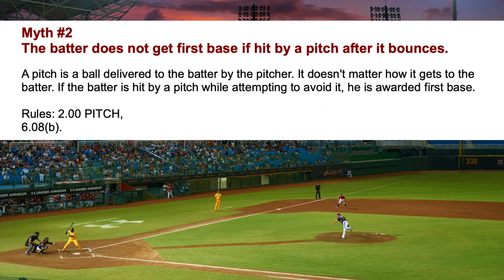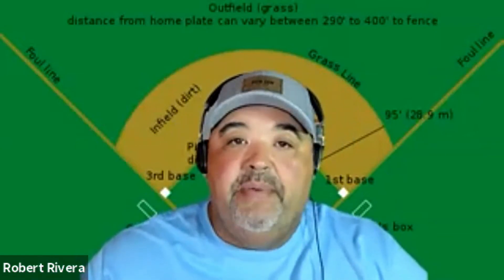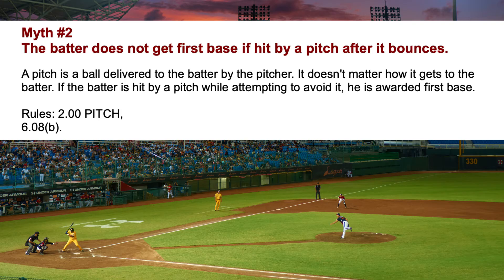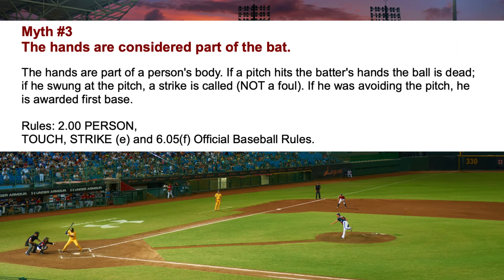Myth Number Two: the batter does not get first base if hit by a pitch after it bounces. Basically, the pitch comes in, bounces, hits the ground, and then hits the batter in the leg — he does get first base. A pitch is a ball delivered to the batter by the pitcher; it does not matter how it gets to the batter. If the batter is hit by the pitch while attempting to avoid it, he will be awarded first base.